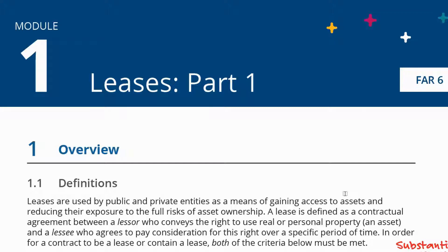For example, when you lease a property, this is property that you're controlling. The first party involved in a lease contract is the lessor — the party which owns or controls a property. The lessor is going to transfer the right to use this property to the other party, the lessee, in return for consideration. So this is what the lease agreement is about.